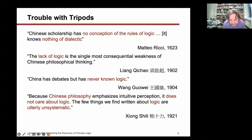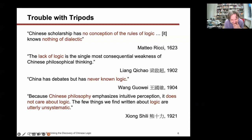Here is a list of people from China who said the same thing. Liang Qichao said in 1902 that 'the lack of logic is the single most consequential weakness of Chinese philosophical thinking.' Wang Guowei in 1905 said 'China has always had debates, but we have never known logic.' Even someone nationalistic and proud of Chinese philosophy said 'because Chinese philosophy emphasizes intuitive perception, it does not care about logic. The few things we find written about logic are utterly unsystematic.' So how did we move from this position to claiming China has 2,500 years of logical history?